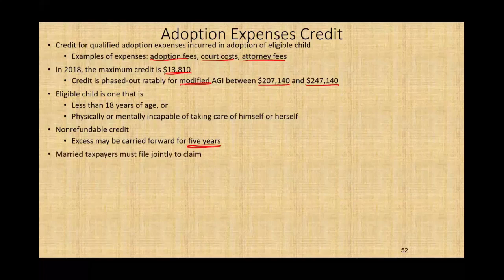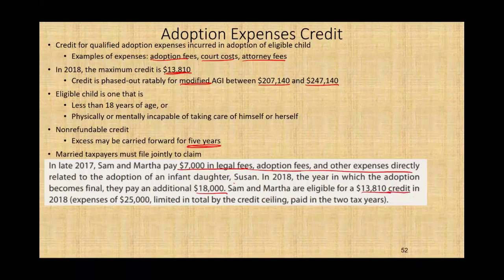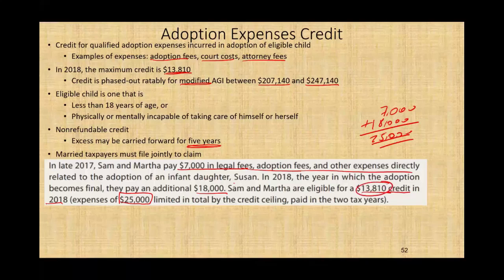Married taxpayers must file a joint return. In late 2017, Sam and Martha paid $7,000 in legal fees, adoption fees, and other expenses directly related to the adoption of their infant daughter Susan. In 2018, the year the adoption became final, they paid an additional $8,000. Sam and Martha are eligible for the $13,810 credit in 2018, because their total expenses of $15,000 — paid over the prior two years — exceed the credit ceiling. Although they paid money in 2017, they can take the credit in 2018.